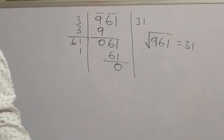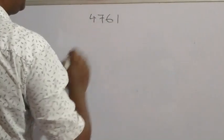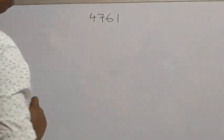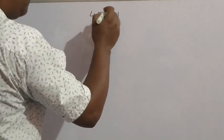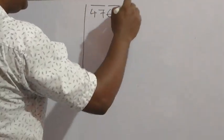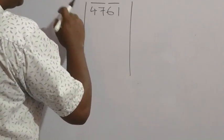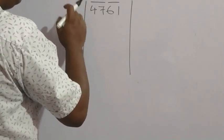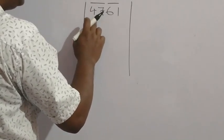Now I am doing a 4-digit number. The number is 4761. From the right side make pairs: 61 is one pair, 47 is one pair. Now divide first with 47. What number to take? 2 × 2 = 4, less than 47. 3 × 3 = 9, less than 47. 4 × 4 = 16, less than 47. 5 × 5 = 25, less than 47. 6 × 6 = 36, less than 47. 7 × 7 = 49, greater than 47.